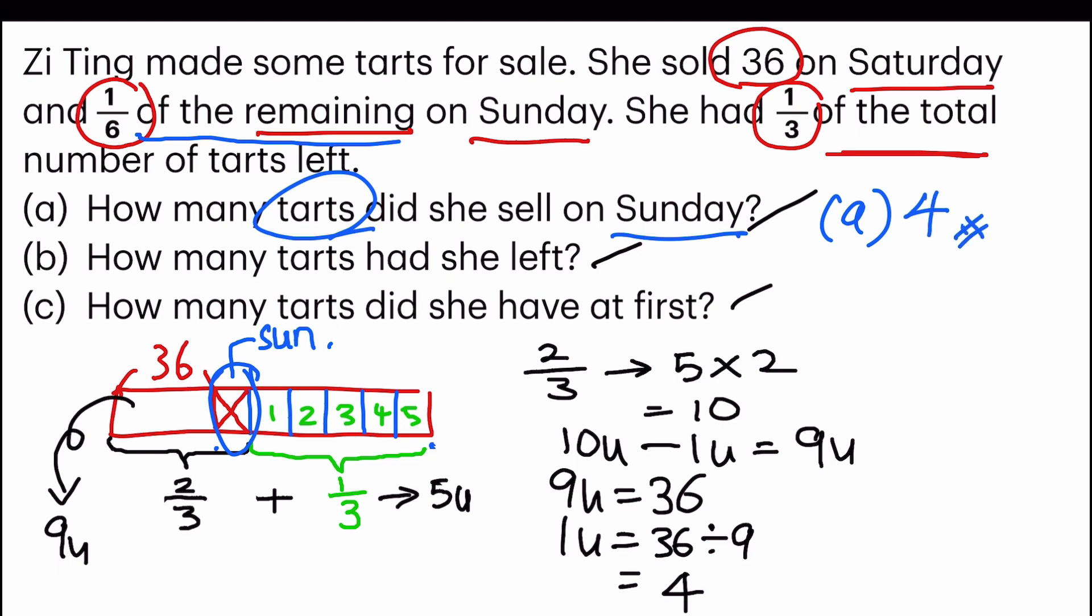B, how many tarts had she left? So five units, five units equals five times four. So B, answer is 20 tarts.